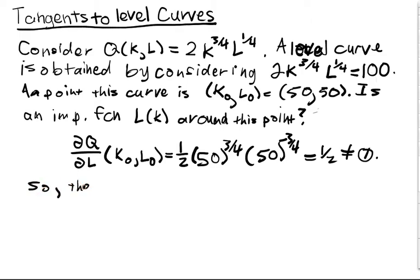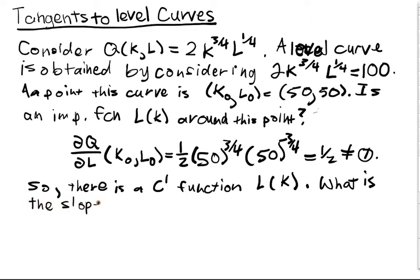So there is a C1 function L(K). That's by the implicit function theorem. Well, we can also ask, what is the slope of the tangent line at L naught, K naught?